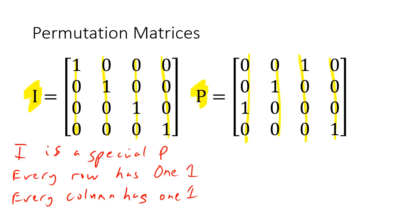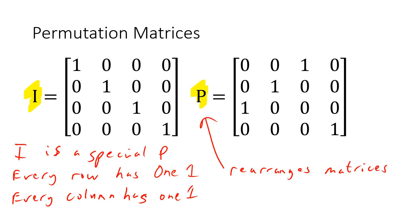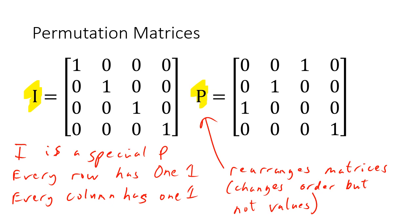What is a permutation matrix doing? It just rearranges matrices. When you multiply by P it changes order but not values. Note that exam questions often use letters rather than numbers, so we'll see those in some questions.